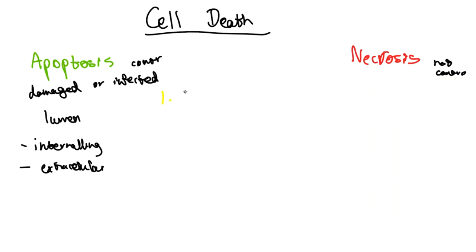Now let's look at the steps of apoptosis. The first is cell shrinkage — the cell will shrink because molecules called caspases break down the cytoskeleton. Make sure you tune in to the video on the cytoskeleton to know why it's important and how it's structurally composed. The next step is called pyknosis, where chromatin condenses into dense DNA and forms patches around the nuclear membrane.